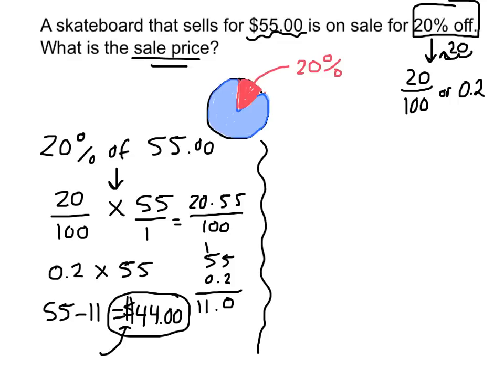This circle graph might help. If this circle graph represents the entire skateboard, it represents the $55 price of the skateboard. Only I don't have to pay for the whole skateboard. I'm not going to pay for this sliver of the skateboard. So I found out what that sliver of the skateboard was. It was $11. Right here. And I subtracted it from $55 to find the sale price.